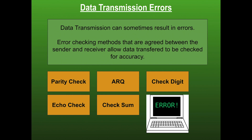When we are transmitting data there is a chance that an error can occur, so we need to have an agreed upon error checking method between the sender and the receiver. This allows the data to be checked for accuracy, and if it's not accurate, for the data to be resent.